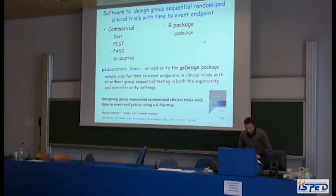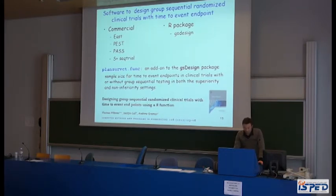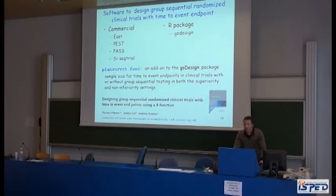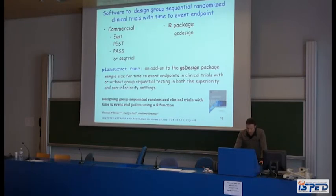Commercial software programs are available to compute sample size for superiority and non-inferiority trials with time-to-event endpoints, and group sequential approaches have been implemented. Unfortunately, few R functions provide tools to plan group sequential trials in this setting. We therefore developed an R function especially designed to compute the number of events and sample size for time-to-event endpoints, permitting planning with or without group sequential testing in both the superiority and non-inferiority setting. This function is an add-on to the gsDesign package in R.